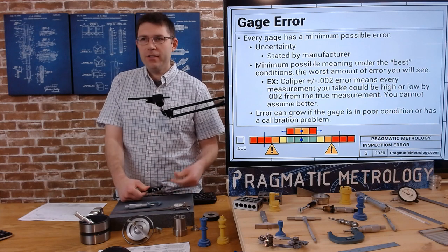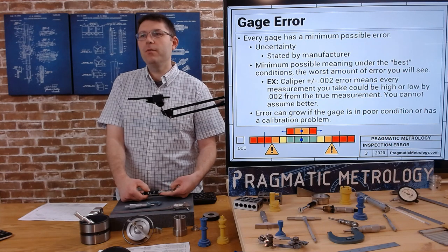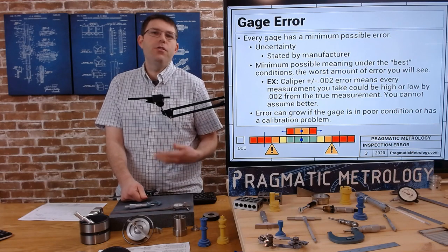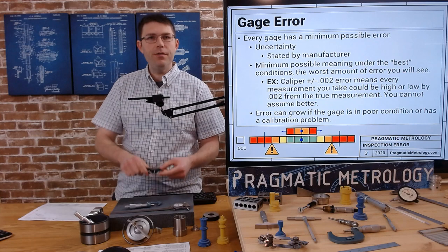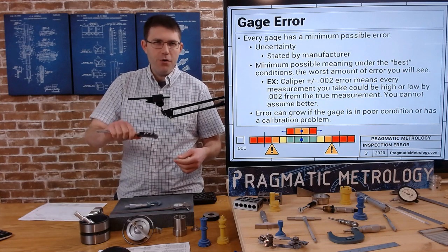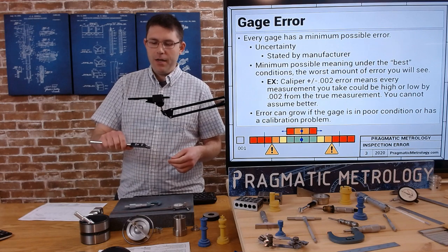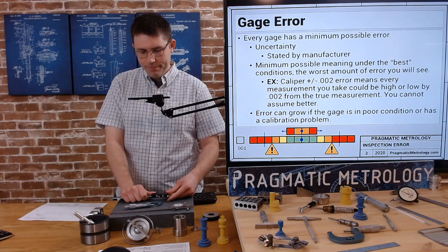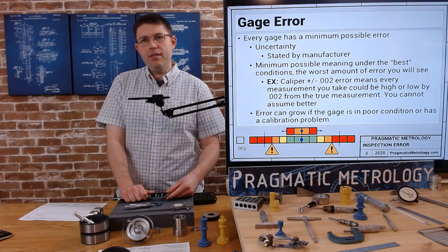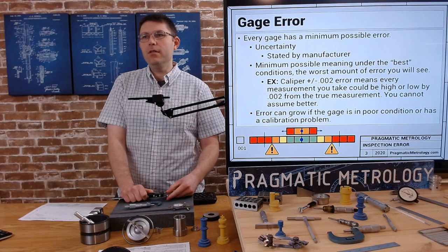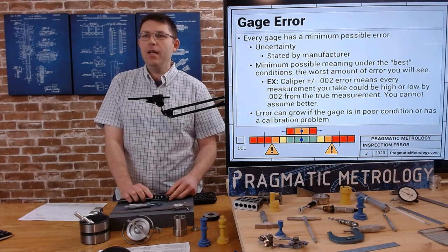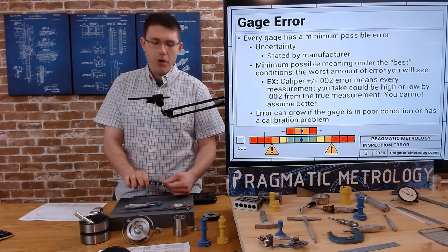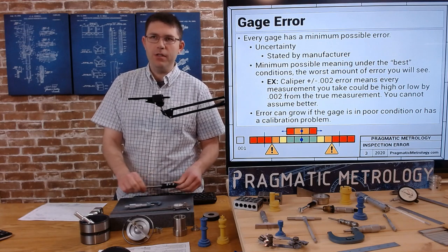For example, this caliper plus or minus 2 thousandths error means every measurement you take could be high or low by 2 thousandths from the measurement you took. You can't assume better. Even if you think you've really used this caliper, you know this caliper, you've used it for years - you can't rely on that as a scientific way of determining the accuracy. Error can grow if the gauge is in poor condition or has a calibration problem. You've got to verify the gauge is in good enough condition to reach that level.